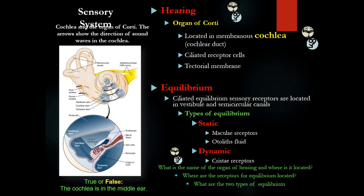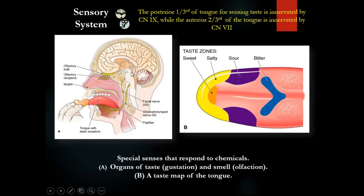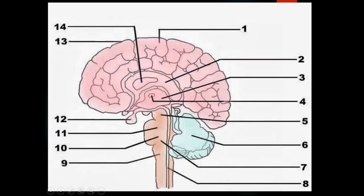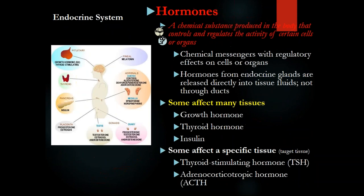For hearing, we have the cochlea and the organ of Corti, which transforms sound waves into electrical impulses going through the auditory — vestibulocochlear — nerve, which is cranial nerve number eight.